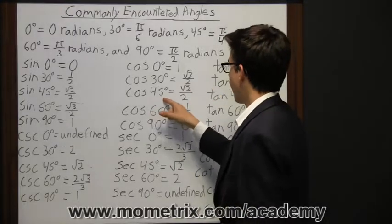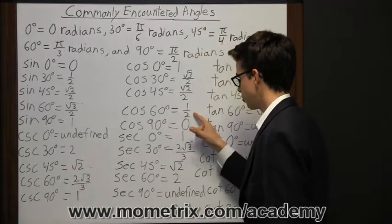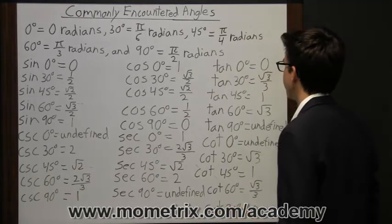Cosine of 45 degrees is equal to the square root of 2 over 2. Cosine of 60 degrees is equal to 1 half or 0.5. And the cosine of 90 is equal to 0.